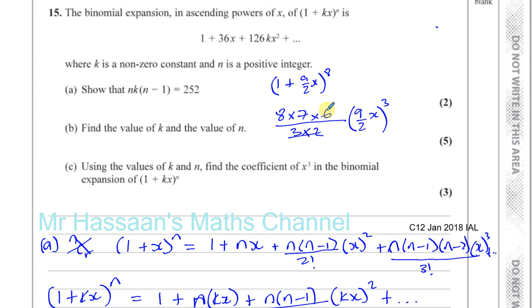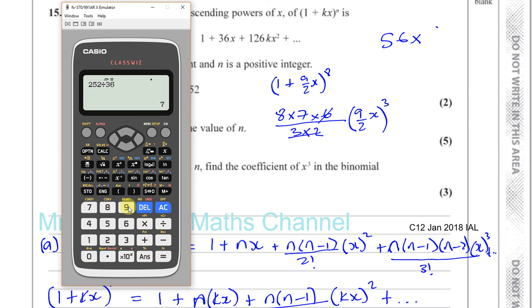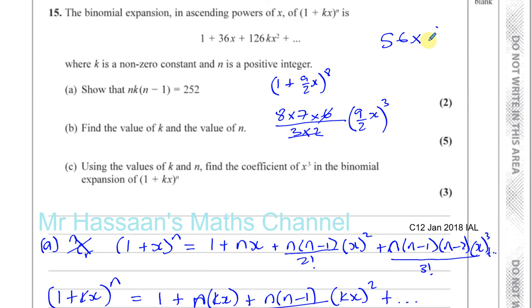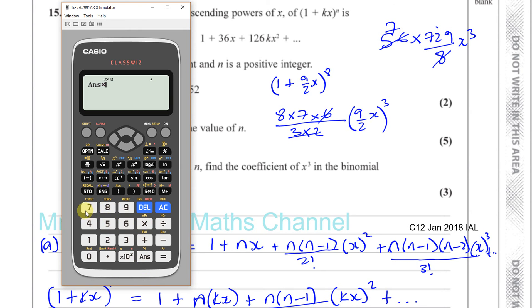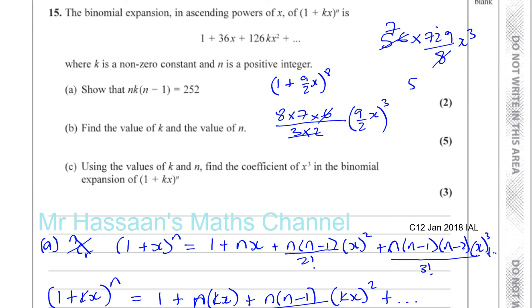So, 3 times 2 is 6. Cancel with that 6 there. 2 cubed is 8. Well, let me just do this in case we mess it up. Sometimes that gets messed up. So, you've got 8 times 7 is 56. So, you have 56 times, and you've got 9 cubed. Okay? 9 cubed, which gives you 729. Okay? Over 2 cubed, which is 8, times x cubed. So, 8 goes into 56 7 times. So, you have 7 times 729. So, this times 7. That gives you 5,103 x cubed.